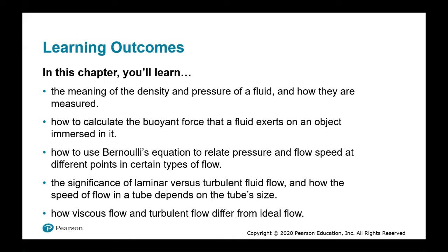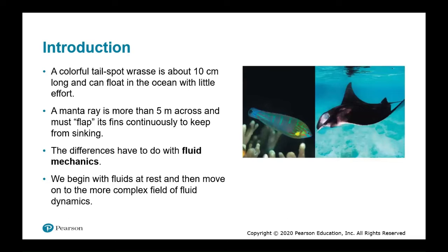We will also know how viscous and turbulent flow differ from ideal flow. Before we begin, let's look at two interesting sea creatures: the tailspot wrasse, about 10 centimeters long, and the manta ray, more than five meters long. When they swim, the manta ray has to put more effort than the tailspot wrasse because it needs to flap its wings continuously so it won't sink. The tailspot wrasse easily floats without much effort. Their very different surface areas affect their motion underwater.